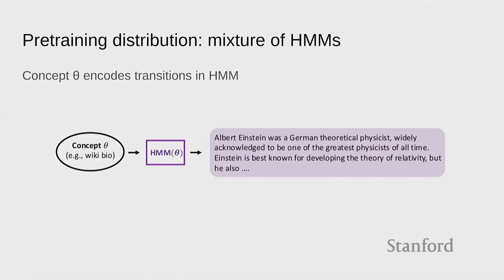We're going to try to make some progress by defining a simple model where the pre-training distribution and prompting distribution differ in a well-controlled way. We'll consider the pre-training distribution as a mixture of HMMs. The idea is that you have a concept theta that encodes, for example, the topic — like 'this is a Wikipedia biography.' Given that theta, which encodes the HMM transitions, we generate text from that HMM. To generate a document, you first sample transitions from this HMM, then sample the hidden states, and then sample the emissions given the hidden states.